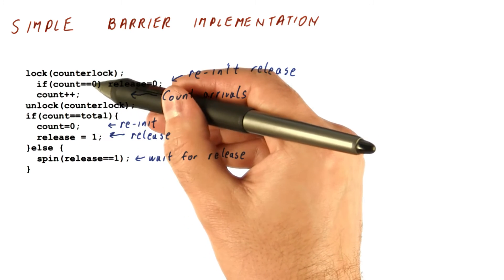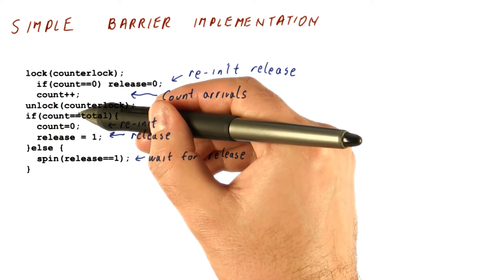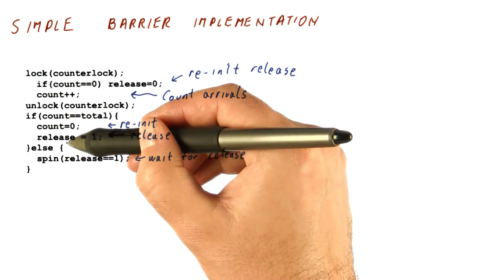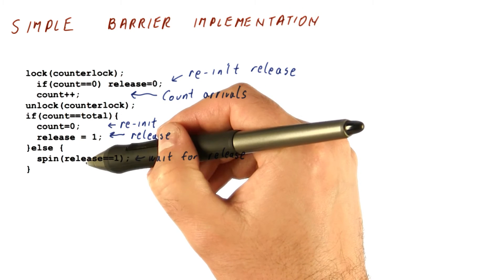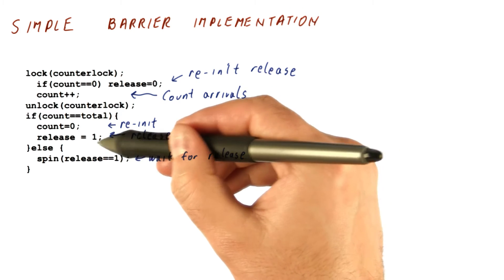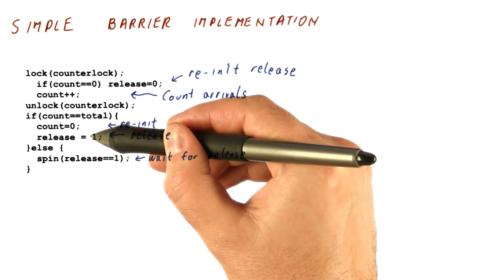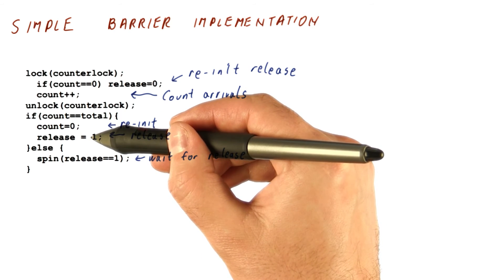So what happens is the first thread might actually be delayed and read the count after everybody's done, in which case it's going to do this. Or it might go here and spin, but either way, release becoming one means that somebody got to this point, which is when the barrier should be released.